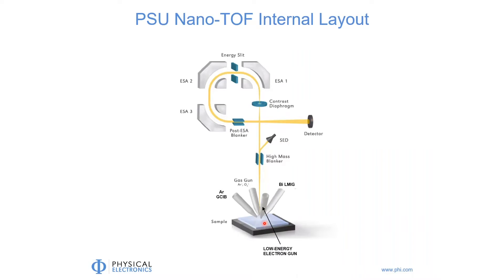The SIMS ions themselves originate within the outer few monolayers of the sample surface. Often we like to look deeper than that, so this instrument is fitted with other ion guns that allow us to etch material from the sample surface so we can look in depth. There is a gas gun available to generate either argon or oxygen beams for etching inorganic materials. There is also an argon gas cluster ion beam, which is very useful for etching away organic materials. The bismuth liquid metal ion gun used for the primary beam is principally used for generating spectra, and the two gas guns are used for etching material away to do in-depth analyses.